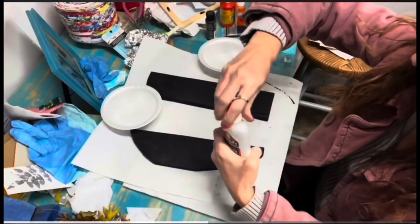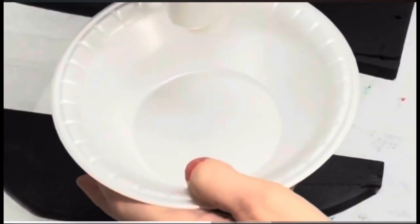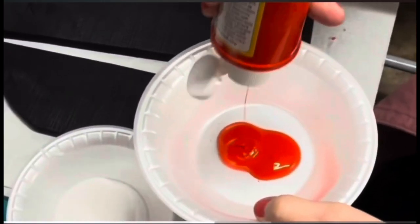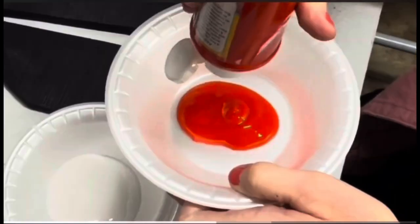Elmer's glue. This is the secret ingredient for making the crackling technique on our pumpkin. I love this technique. Now to pour out some of this vibrant orange.